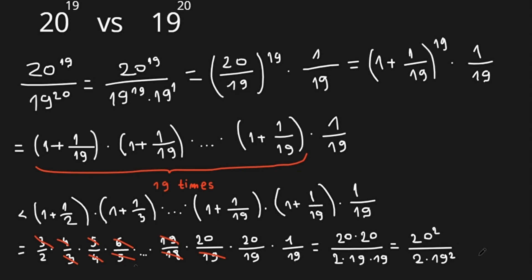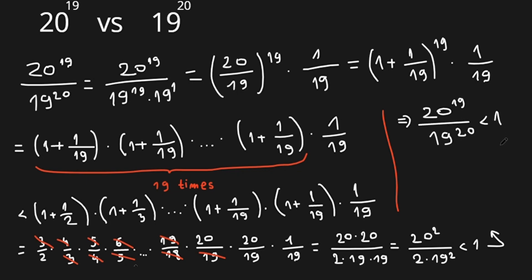This value is smaller than 1, so 20 to the power of 19 over 19 to the power of 20 is smaller than 1, which means 20 to the power of 19 is smaller than 19 to the power of 20. So this is our answer.